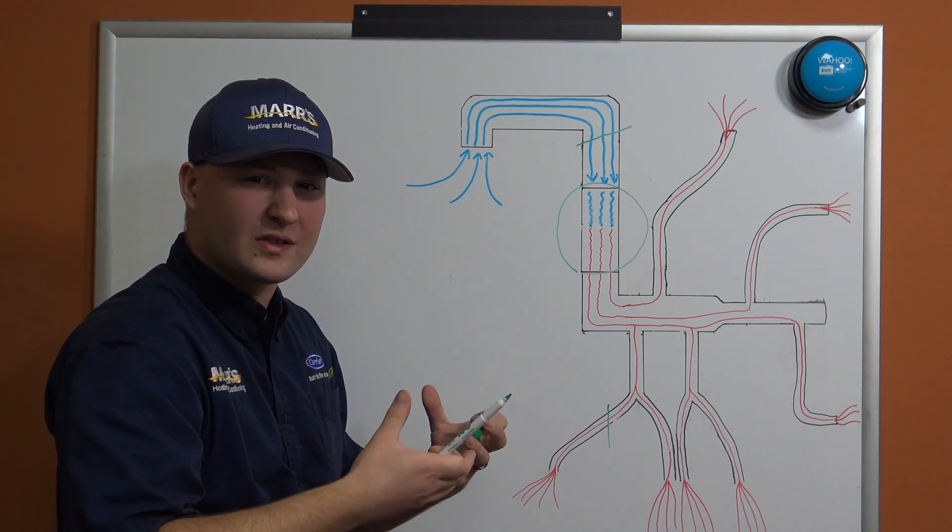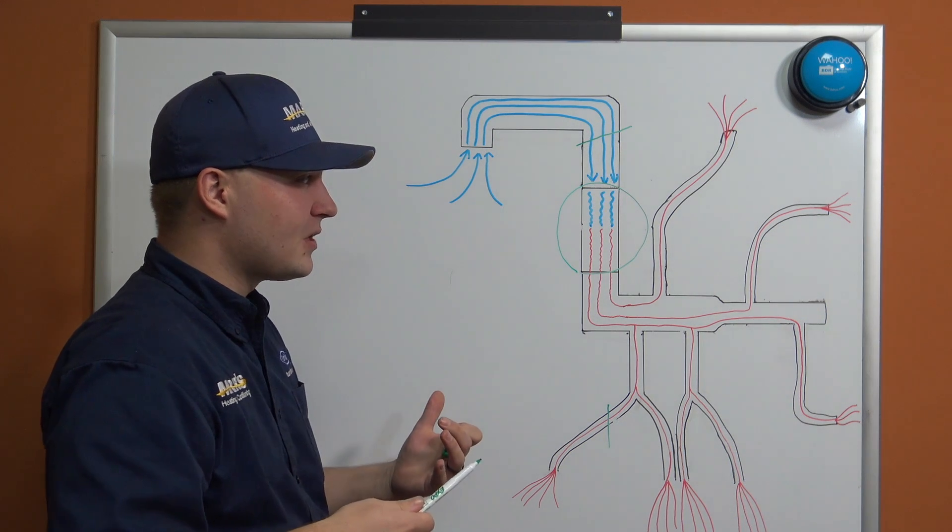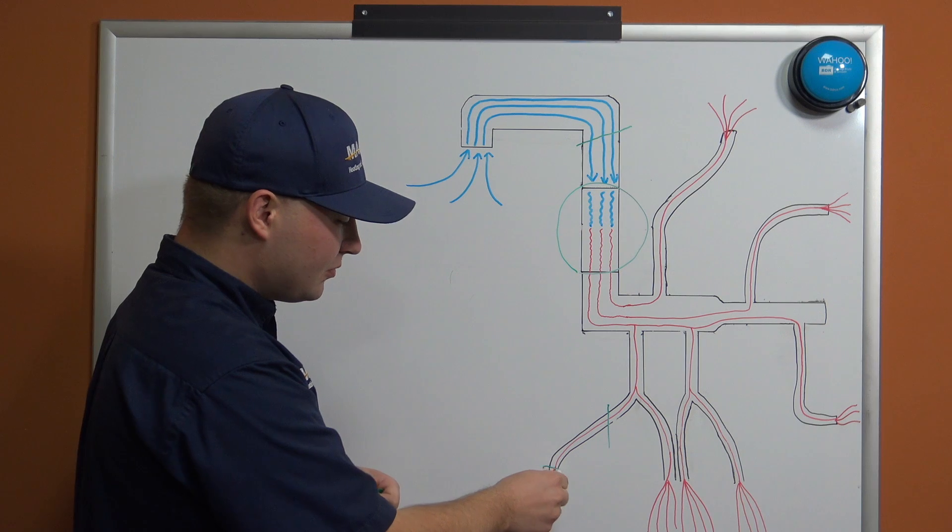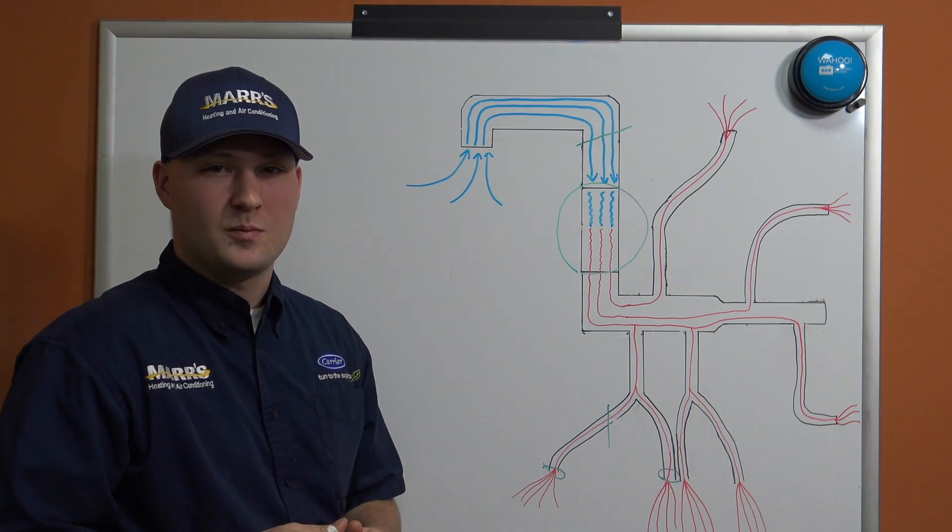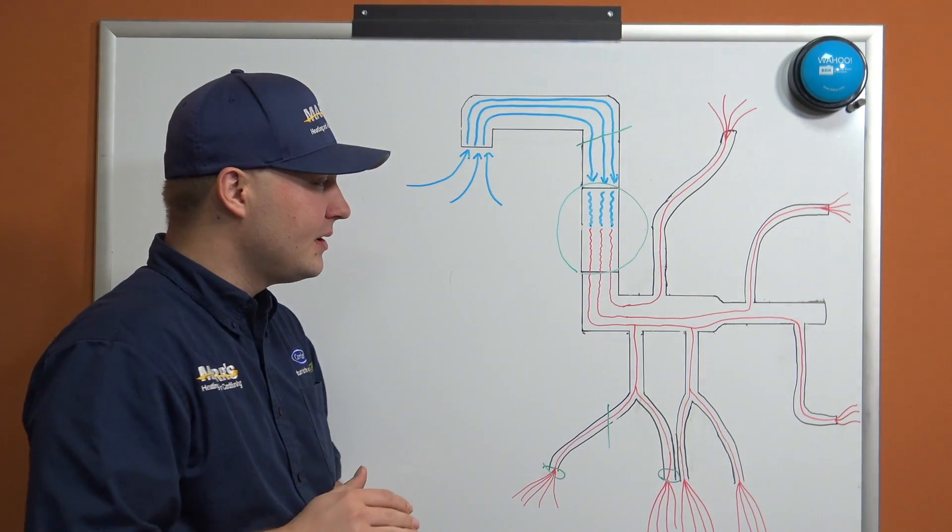Generally, this is why we tell you to change your filter often, and we don't want you to block off too many of your supply registers. Typically less than 10 percent is ideal for your house—depends house to house.